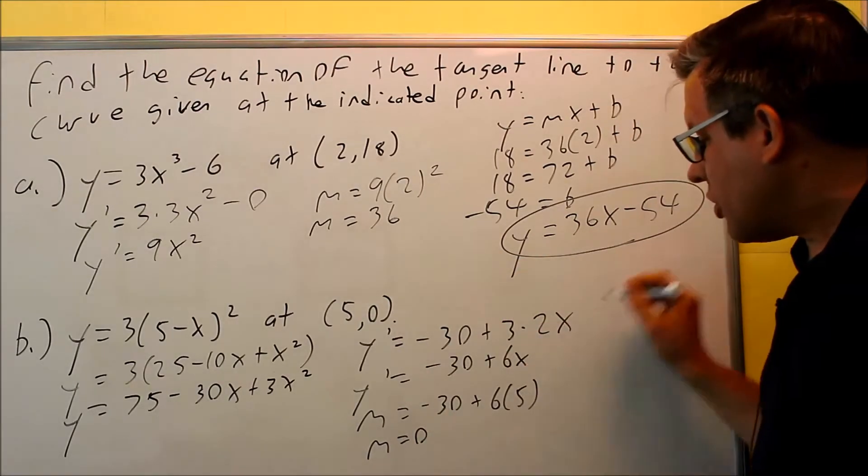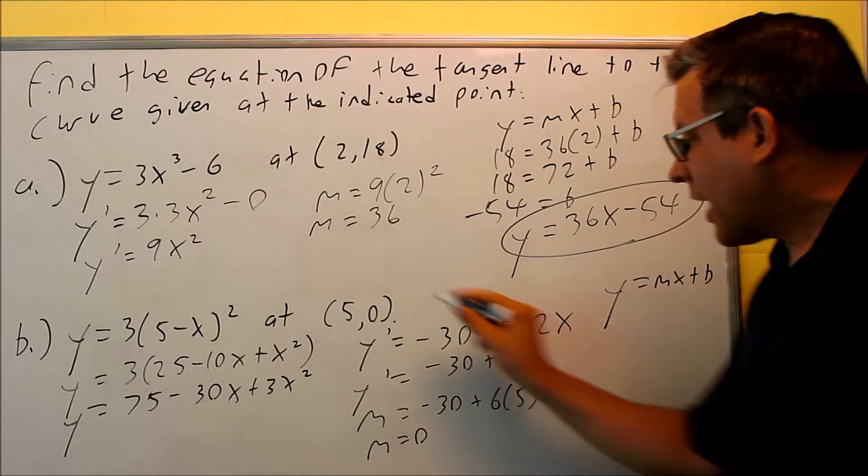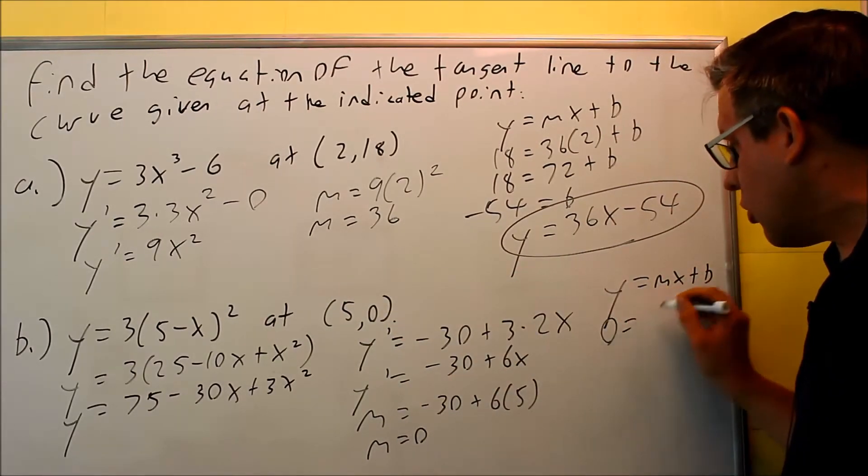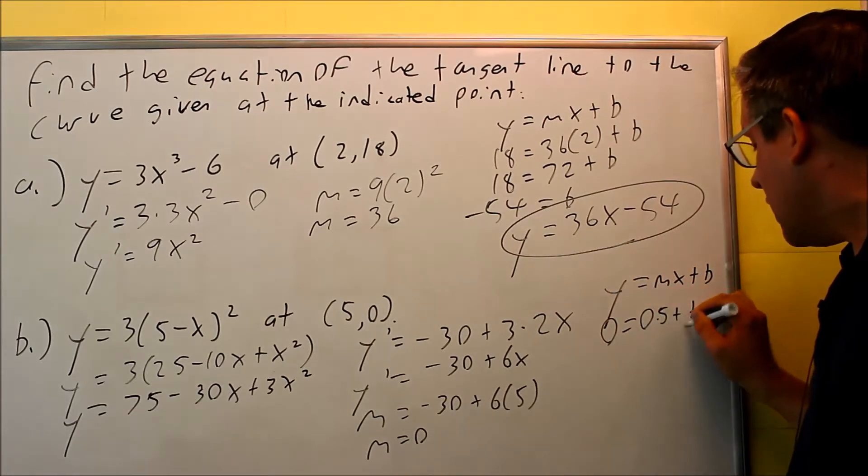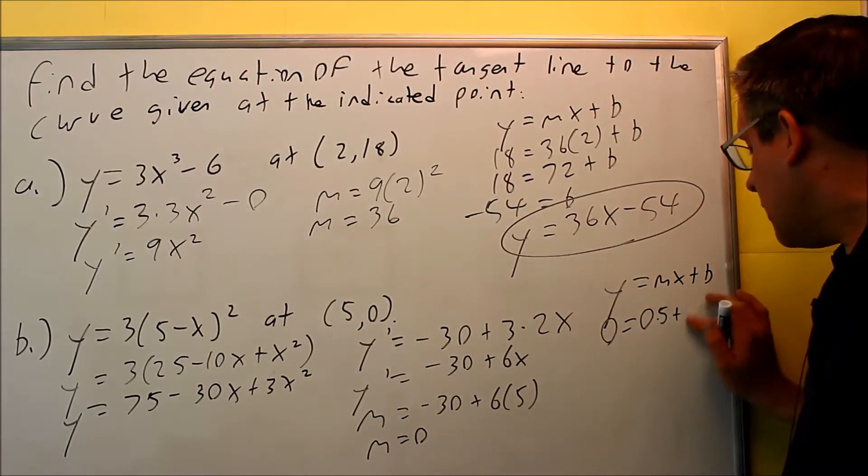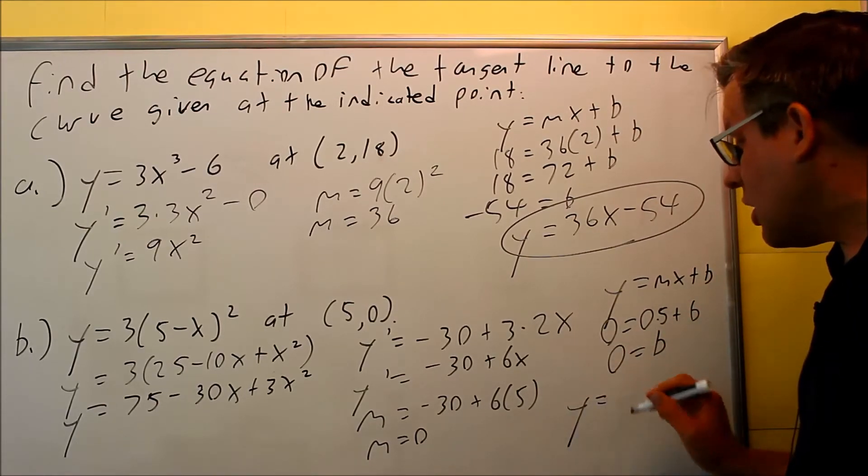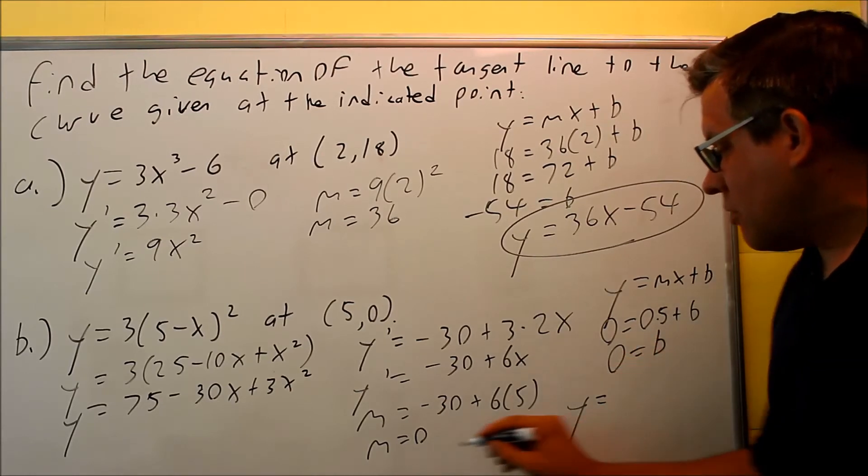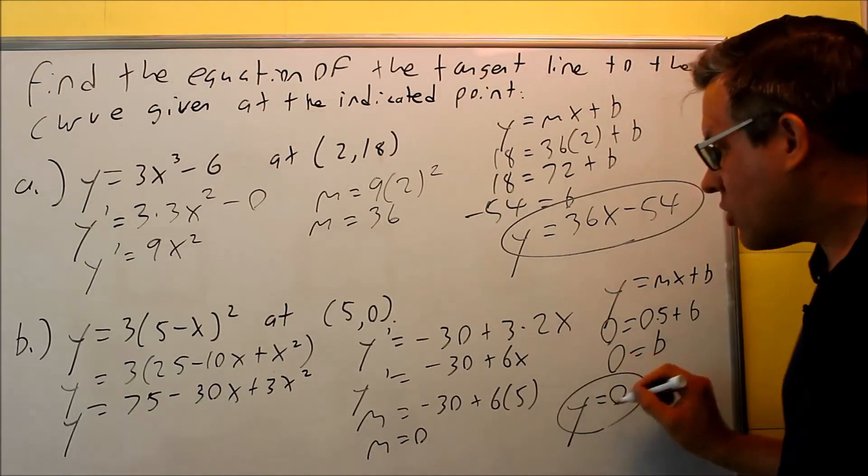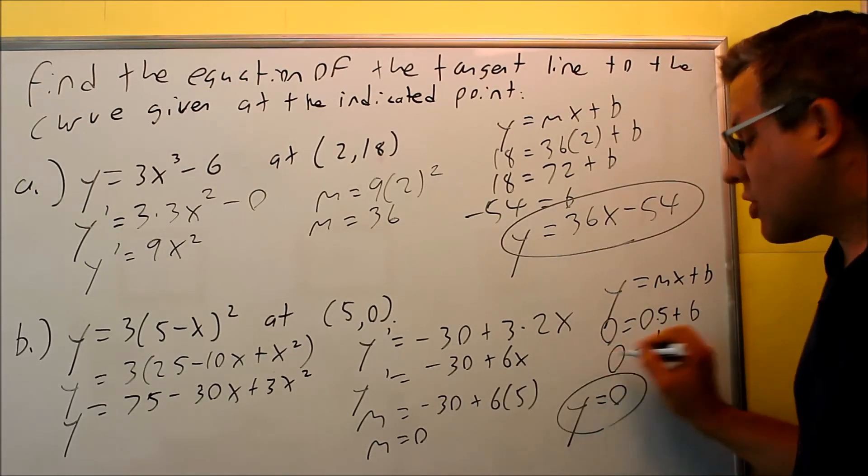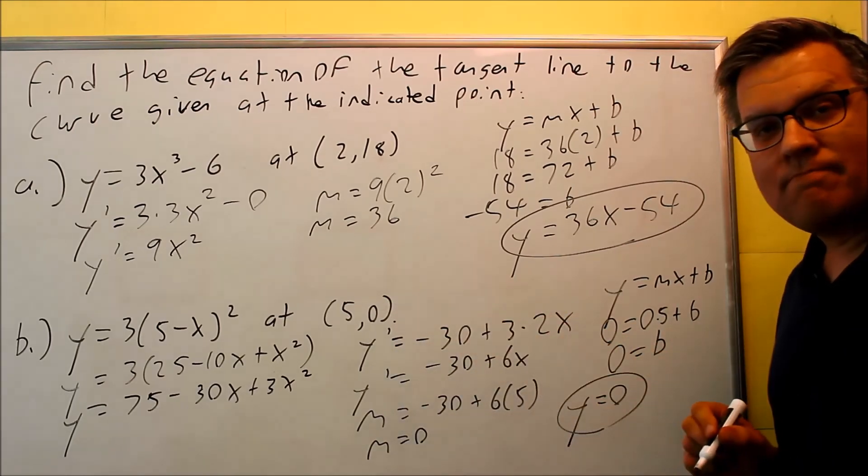Since we have a slope of 0, when we do y equals mx plus b, I can still plug in the x and the y. 0 equals my m, which is 0 times 5 plus b. That means my b is going to be 0 also. So my equation is just going to be y equals 0. That's the equation of your tangent line. It's going to be a horizontal line in this case going through at 5, 0.